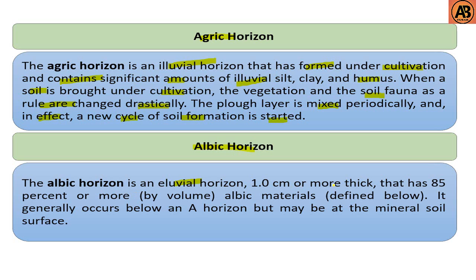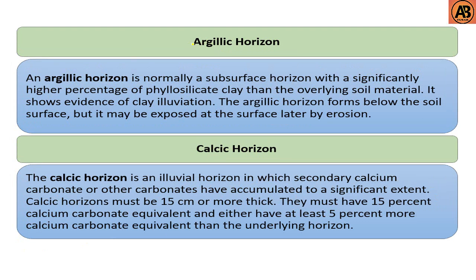The next one is the albic horizon. The albic horizon is an eluvial horizon one centimeter or more thick that has 85 percent or more albic materials. It generally occurs below an A horizon but may be a mineral soil surface.